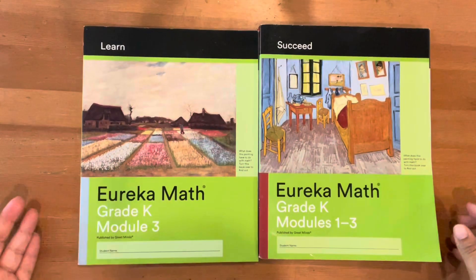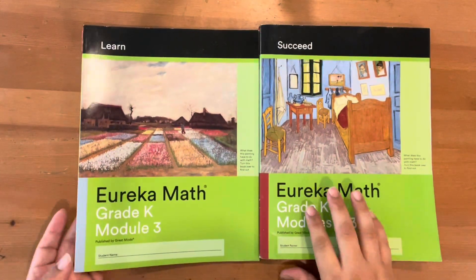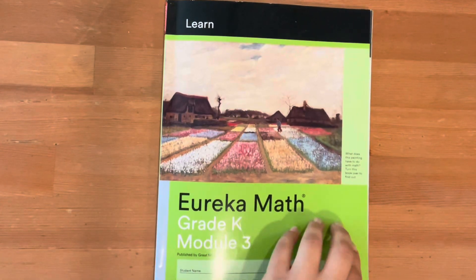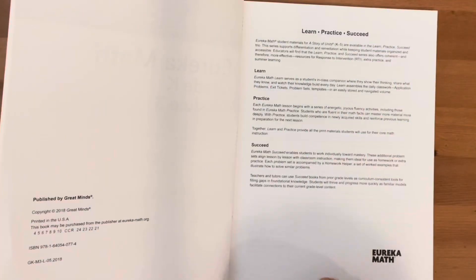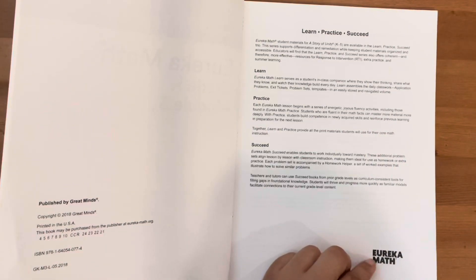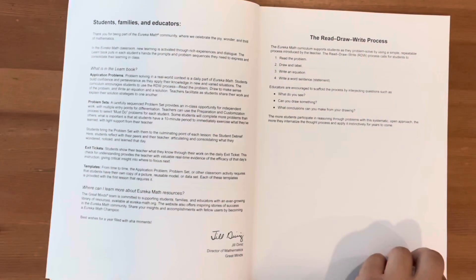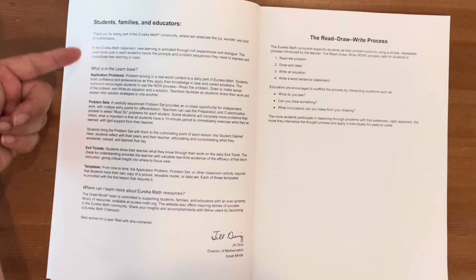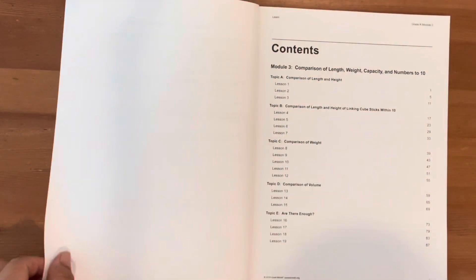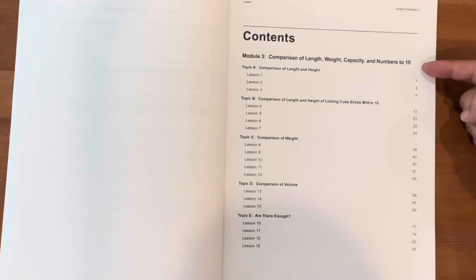Let's flip through and review Eureka Math Module 3. There are three workbooks per book set: Learn, Practice, and Succeed. The book type is located at the upper left corner on the outer cover. In this Learn workbook, there are eight topics A through H, and each section or topic is divided into lessons.